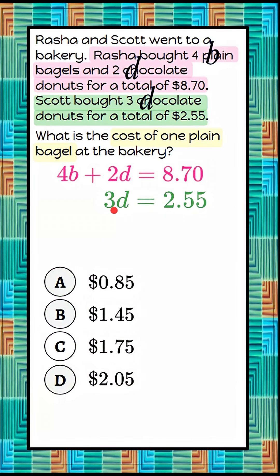So this equation only has one unknown, so I can solve for D. I'm going to do that by the inverse of multiply by three is to divide by three. What I do to one side, I must do to the other. I'm going to divide by three, which gives me one D, and $2.55 divided by three is $0.85. So I know that the cost of one donut was $0.85.